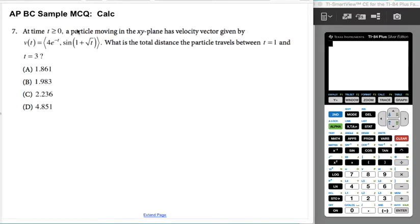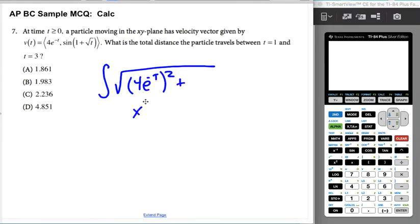So total distance is essentially just the integral of the speed. The speed is going to be this thing squared—so this is going to be your x'(t) squared plus your y'(t) squared.